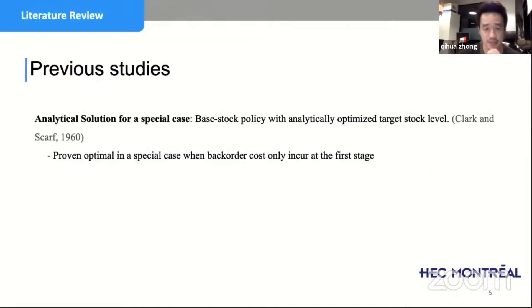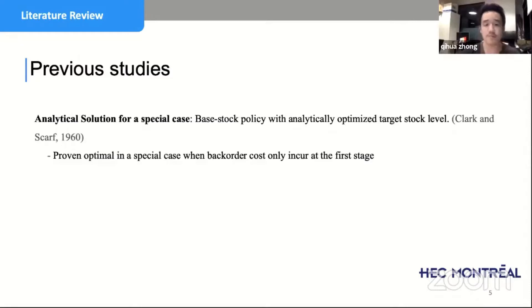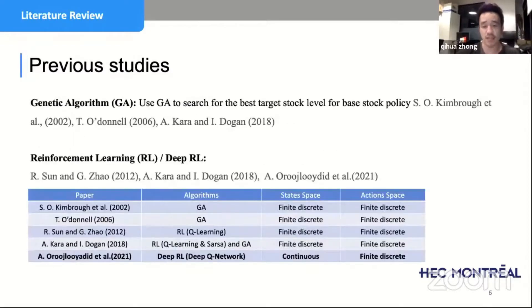Prior studies dating back to the 1960s found that in a special case where backorder cost is only incurred at the first stage — the retailer — the optimal policy is known: a base stock policy with an analytically optimized target stock level. But that is only a special case. For the general case with backorder costs everywhere, the optimal solution is unknown. Later studies tried genetic algorithms, traditional reinforcement learning, and deep learning methods to solve the problem.